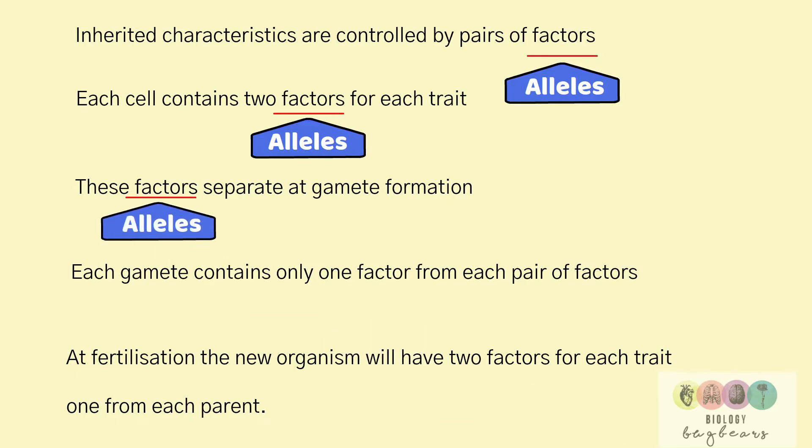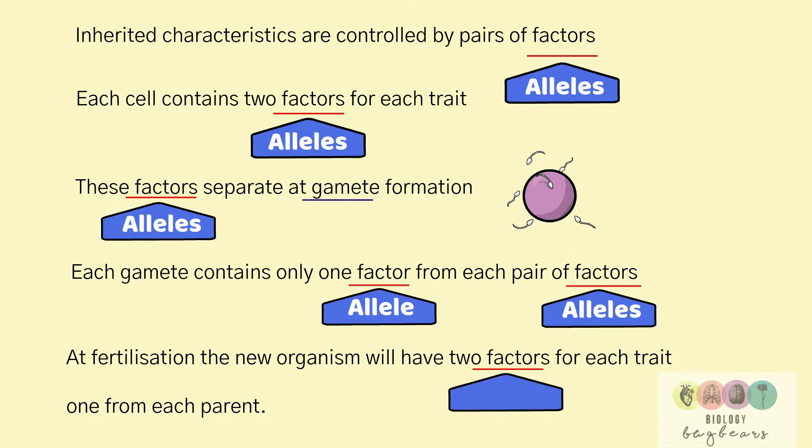These alleles separate at gamete formation. Each gamete contains only one allele from each pair of alleles. And at fertilization, the new organism will have two alleles for each trait, one from each parent.